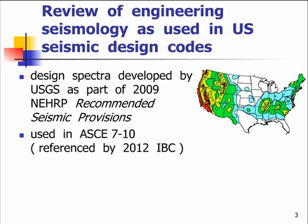These are the books that, when published in hard copy, used to have yellow covers. Now you can just get them online in PDF. They're used by the dominant load and general umbrella document for material standards in the US — that's ASCE 7-10. And ASCE 7-10 is referenced by the 2012 International Building Code.